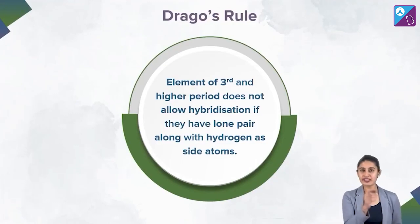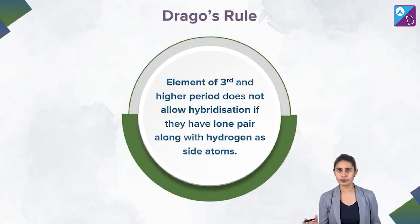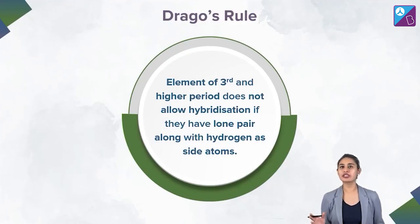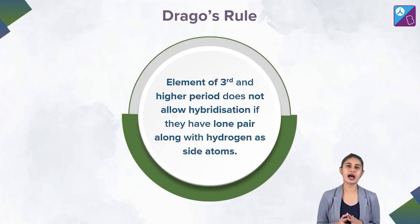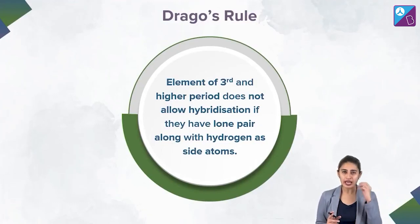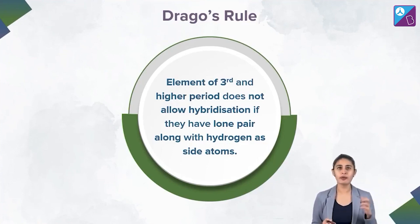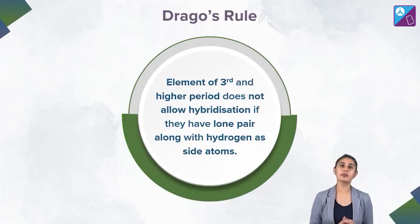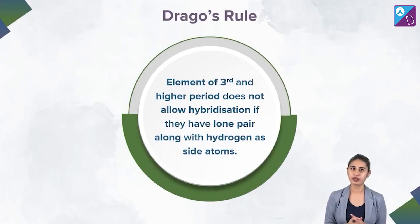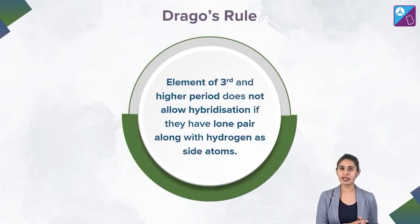When the central atom is a third period element and onward, attached with a side atom which has electronegativity less than or equal to 2.5, then something very drastic happens. The lone pair is generally present in the s orbital, and if the s orbital is not participating — is stereochemically inactive or not participating in hybridization — then only the p orbitals are participating in hybridization. Should we say percentage s character is zero?